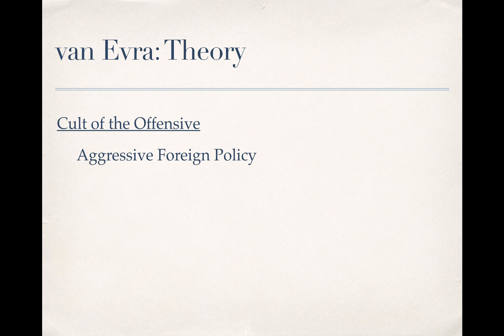The first is aggressive foreign policy. In order to be in the best possible position for a first strike, states sought to maximize the territory and resources they controlled. This increased the likelihood of war because each state saw that any strategic gain by the other was a threat — if a rival controlled mildly strategic territory or resources, it promoted conflict among the states.